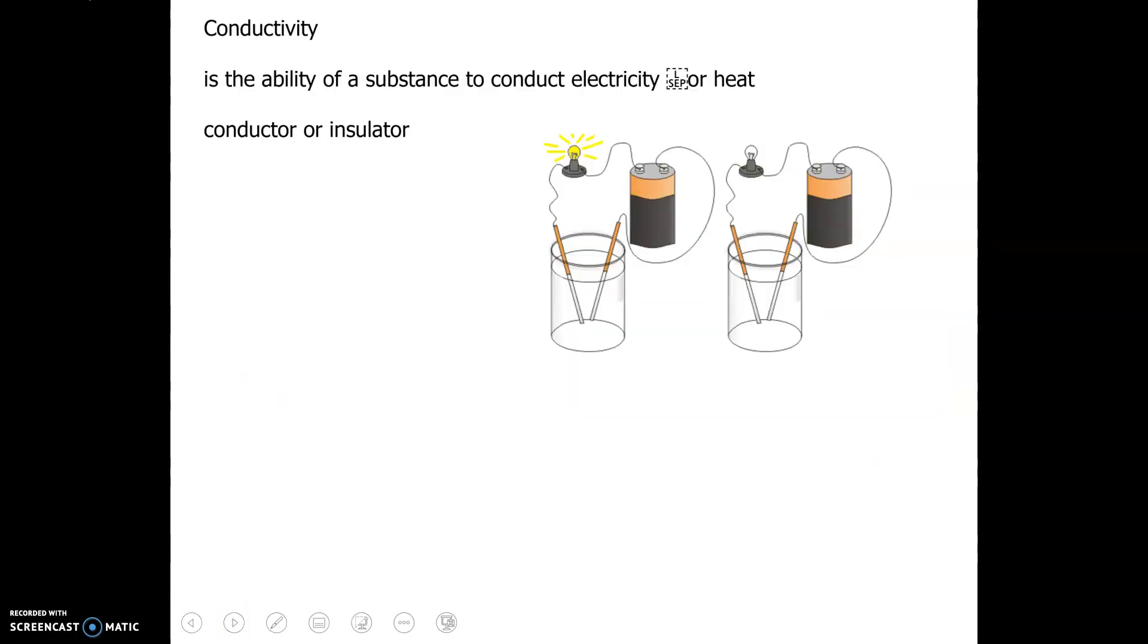We have conductivity, so the ability of a substance to conduct electricity or heat. So we can have a conductor or we may have an insulator.